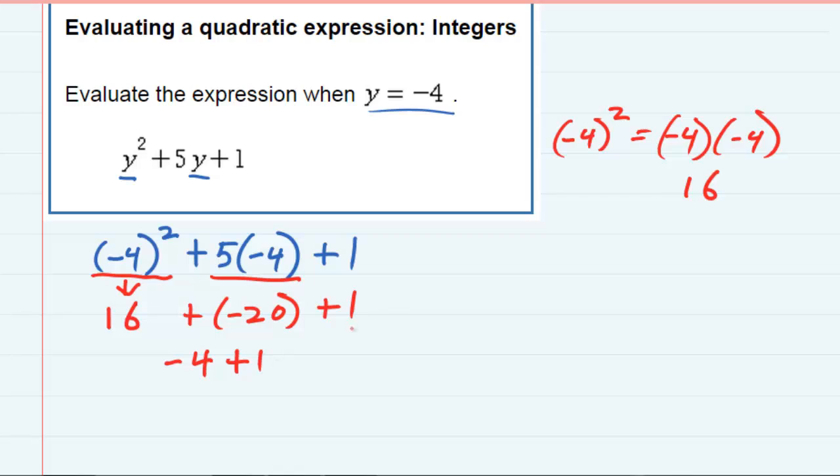Gives me a negative 4 plus 1. Again, the signs are different, so I subtract and keep the sign of the larger. Negative 3. So our final answer is negative 3.